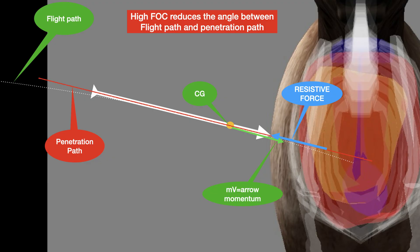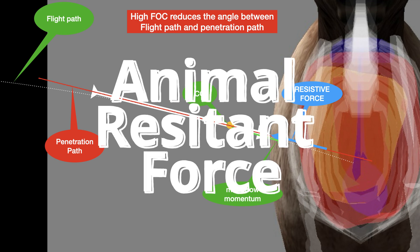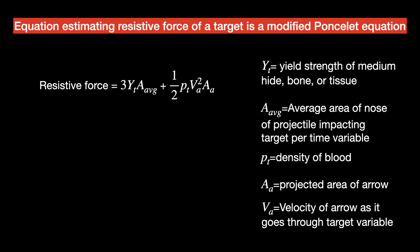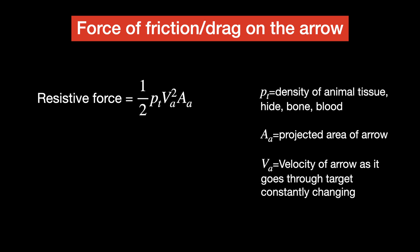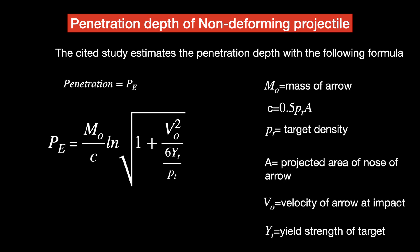The big question is: is the resistive force an animal provides dependent on the arrow at all? We used the Poncelet equation, a well-known formula for estimating target penetration. It considers two main factors: the yield strength of the material — in this case how much force is needed to cut the tissue — and the force needed to move the mass of tissue out of the way.